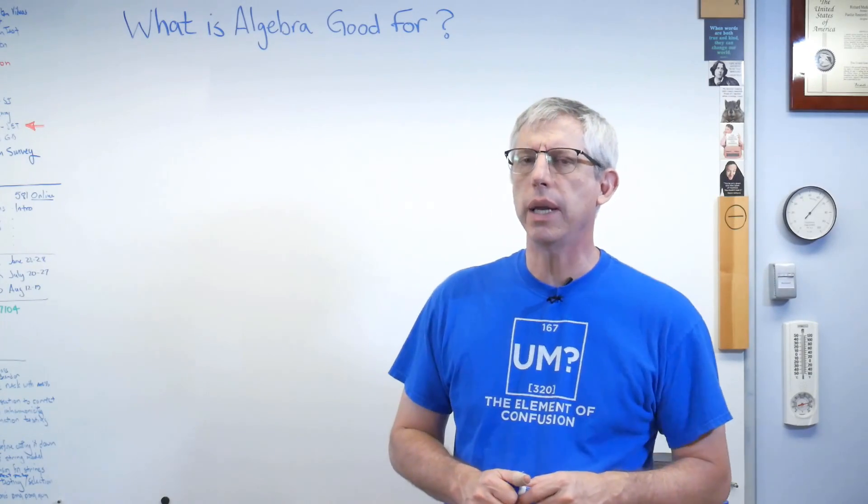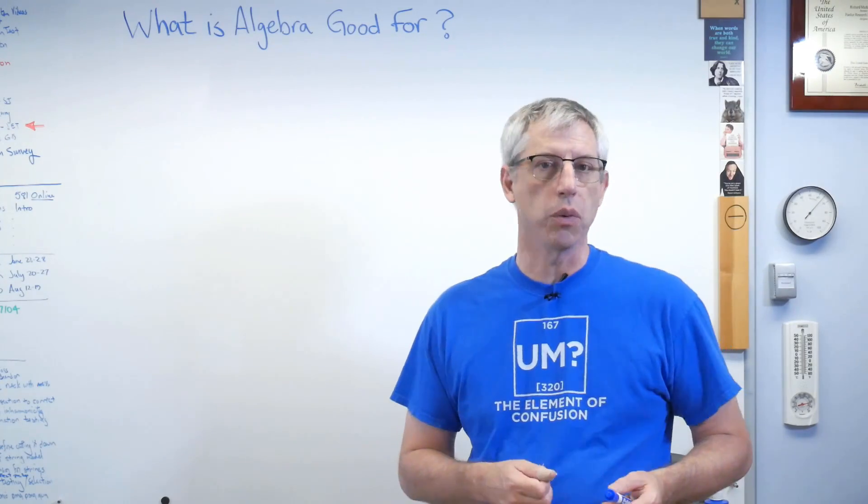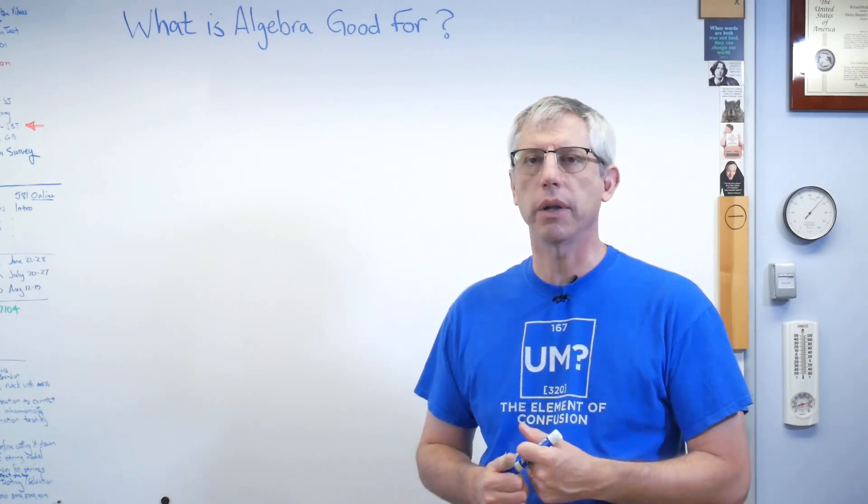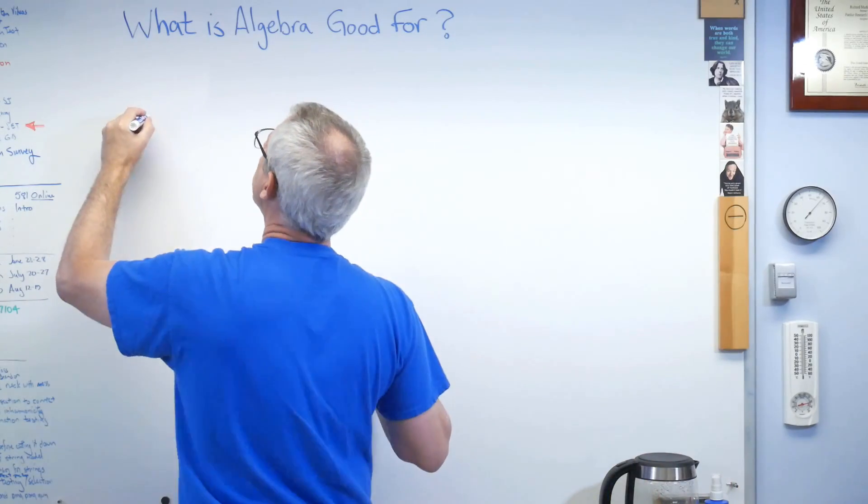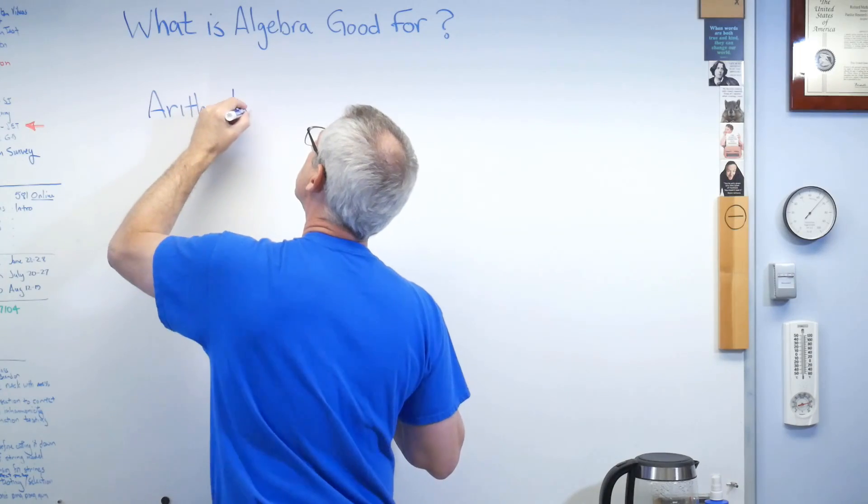Before we get too much farther along, let's talk about the difference between algebra and arithmetic. Now arithmetic is just working forward through a calculation. So if I want to write down some expression that's arithmetical, just arithmetic, you know I can write down 5 over 3 times 9 plus 4 equals something.